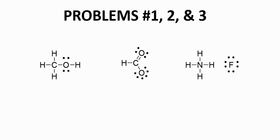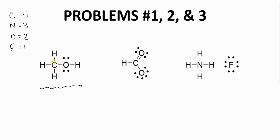Here are our first problems. Let's write in the corner a reminder: carbon tends to make 4 bonds, nitrogen 3, oxygen 2, and fluorine 1. In the left, we have our first compound. We have a carbon with 4 bonds — as we'd expect, it has a full octet, so that carbon is neutral. Here's an oxygen with 1, 2 bonds and 2 lone pairs — that is a full octet. That oxygen is neutral. Neither the carbon nor the oxygen has a formal charge.